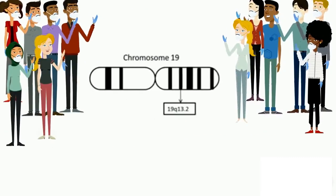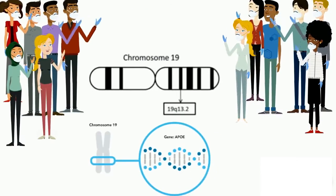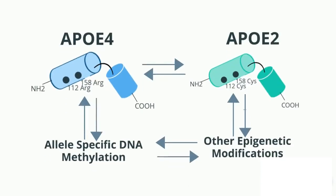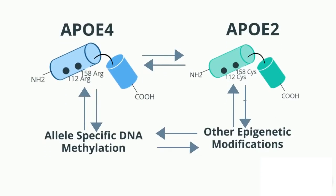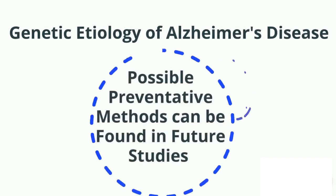To do this, we will sequence the DNA of many people both with and without Alzheimer's and then analyze the APOE gene. The epistatic interactions between the two alleles will be analyzed by detecting allele-specific gene expression patterns and epigenetic modification. From this we can gain more insight into the genetic etiology of Alzheimer's, and future studies can look into preventative measures.